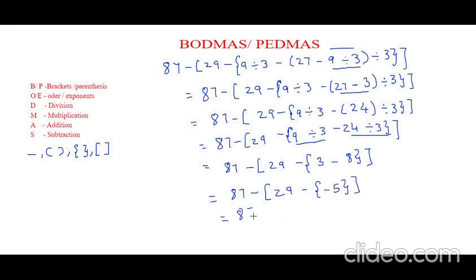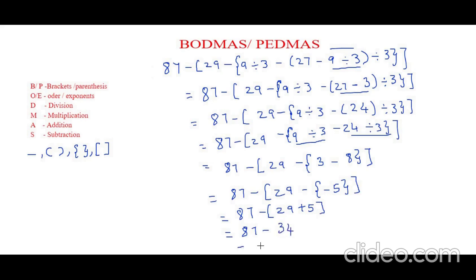We have 87 minus 29, and negative times negative is positive 5. Now let's solve whatever is inside the square bracket: it's 87 minus 29 plus 5, which is 34. And now 87 minus 34 is 53.